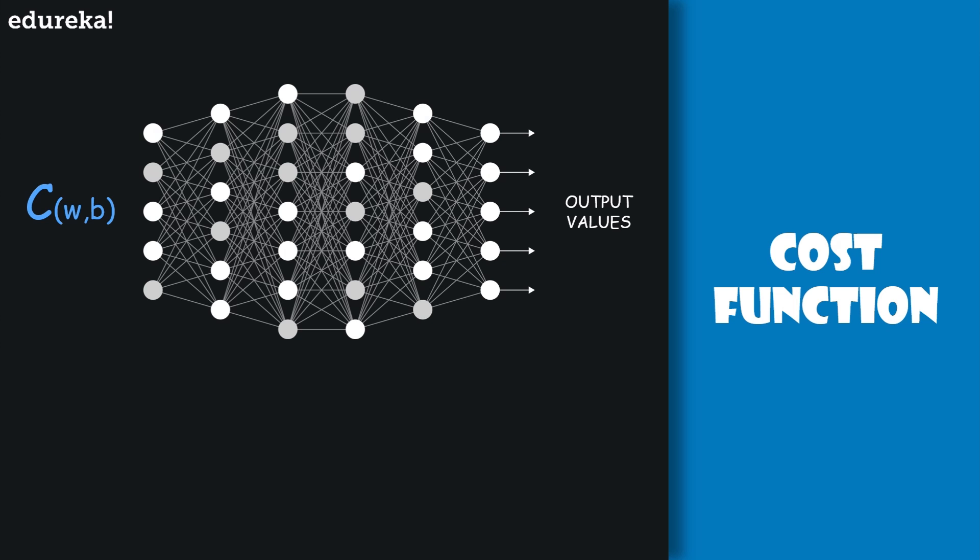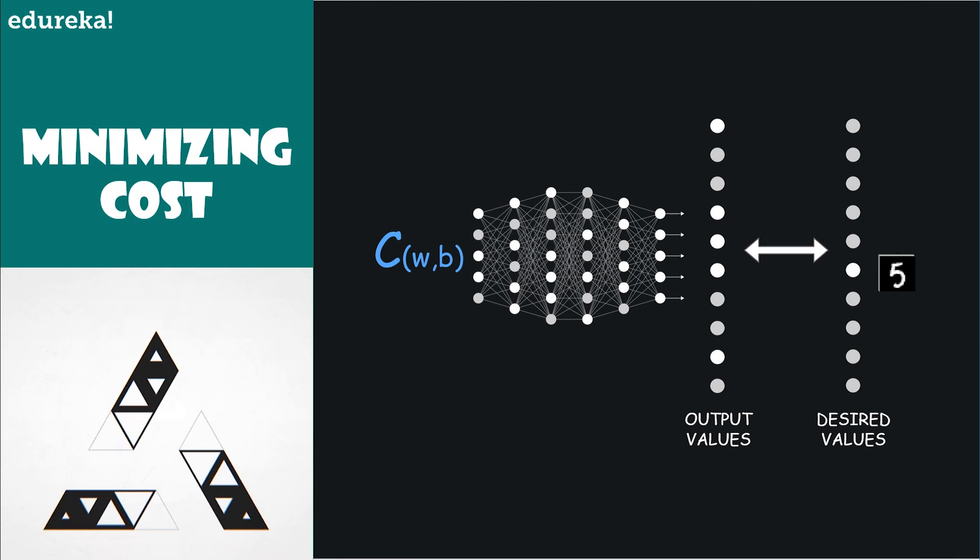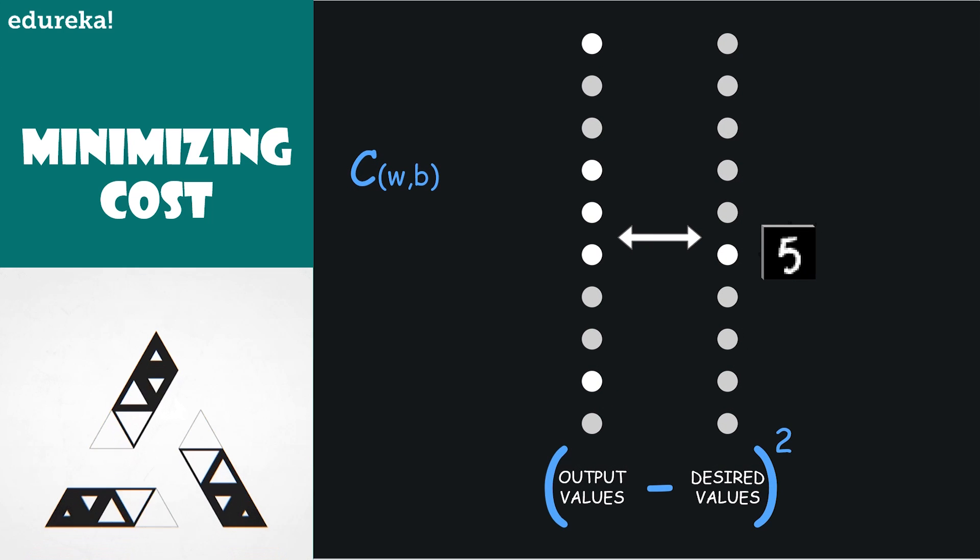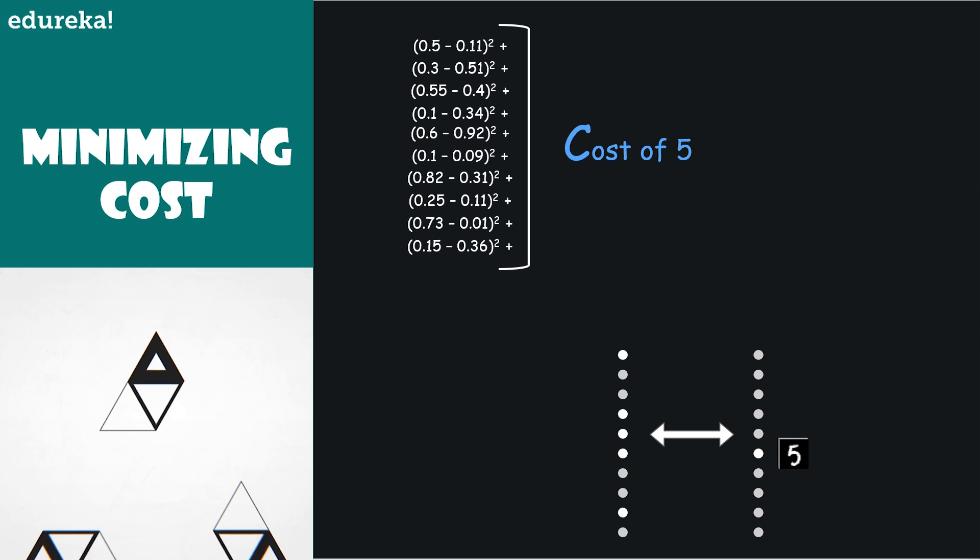We'll do that using an algorithm known as gradient descent. We are just going to initialize all those weights and biases totally randomly. What we do is define a cost function as a way of telling the computer what is good and what is bad. To do this we need to add up the squares of the difference between each of the given outputs, which are the given activations, and the value you want them to have. And this is what we call the cost of a single training example.